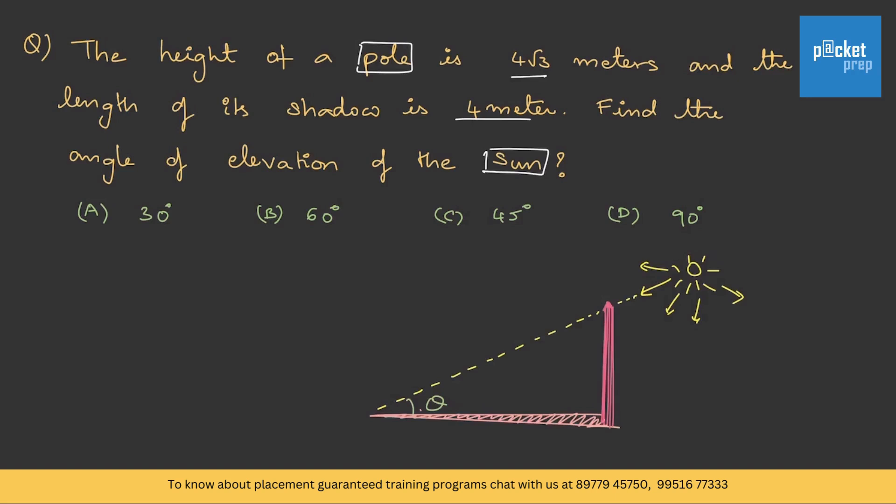It looks something like this. There is a pole, there is sun, and because of the sun rays, the shadow is formed. Clearly, you can see there is a triangle formed and the pole is always 90 degrees, so this is a right angle triangle. We can use trigonometric ratios.